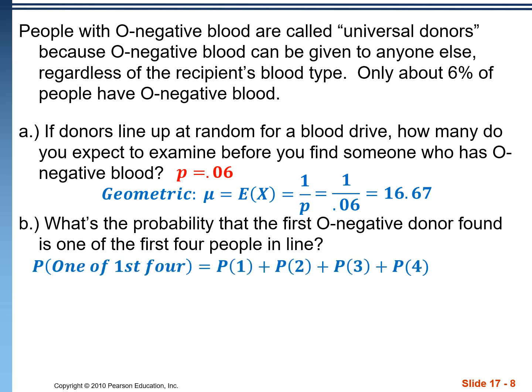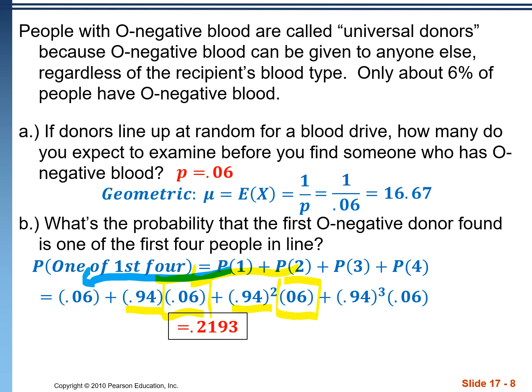What's the probability that the first O negative donor found is one of the first four people in line. So here they can be the first person, second, third, or fourth. And we want to find these probabilities individually. So the probability that the first person is just our probability of success. There's a 6% chance that that first person is O negative. For them to be the second person, two events had to have occurred. First off, our first person was not O negative, and the second person was. For the third person to be the first O negative donor, we had two people that were not O negative, followed by one who was, and then same thing for the fourth. Add those all up, 0.2193.